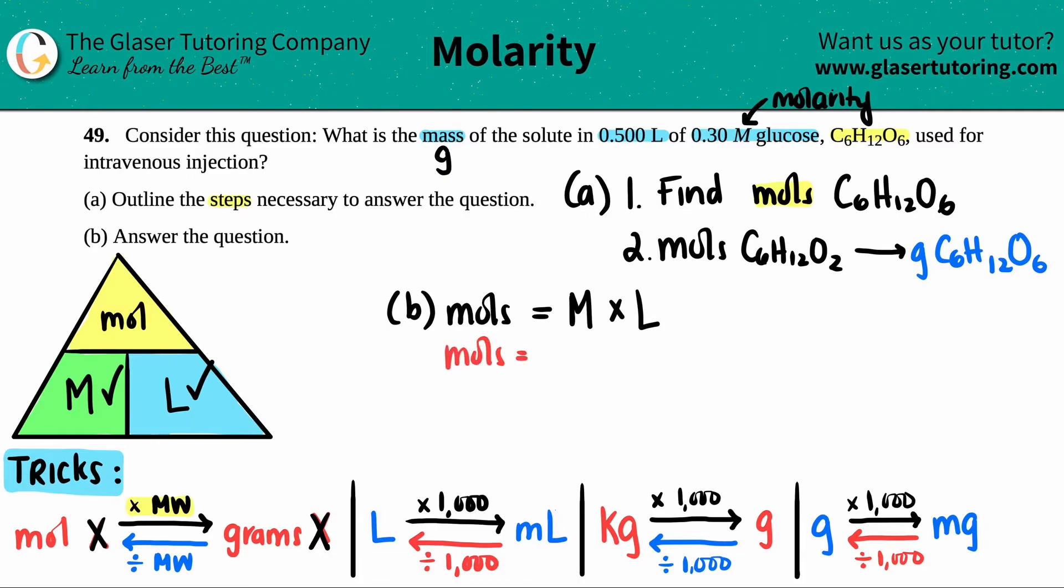So let's do it. The moles would equal the molarity 0.30 M, and then the liters, which is 0.500. So moles equals 0.3 times 0.5, which is 0.15. So this would be 0.15 moles of C6H12O6. The first part is done. We found the moles by using the formula.